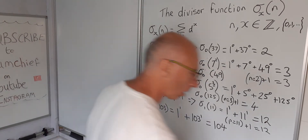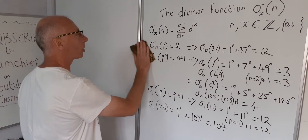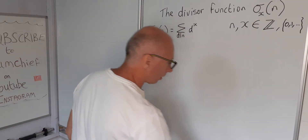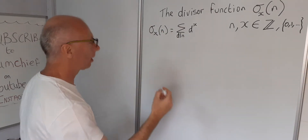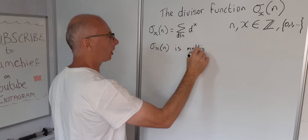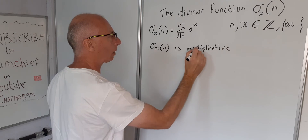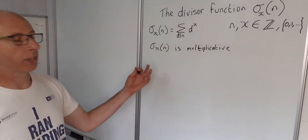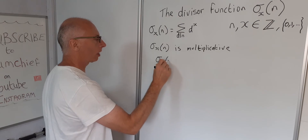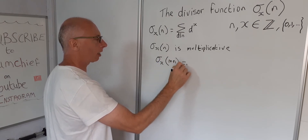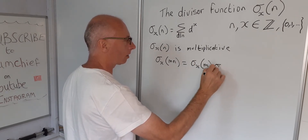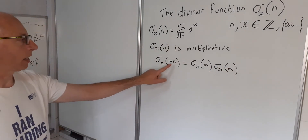Now let's show that the divisor function is multiplicative. In number theory, multiplicative means that sigma_X(m×n) equals sigma_X(m) times sigma_X(n) — that is, the function applied to the product equals the product of the functions applied individually.